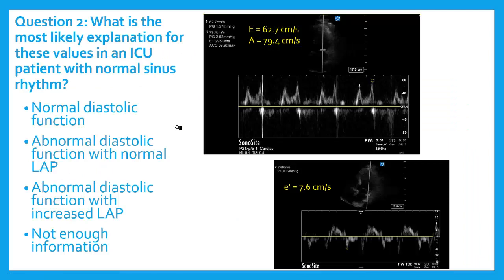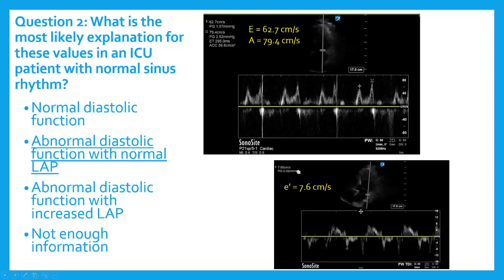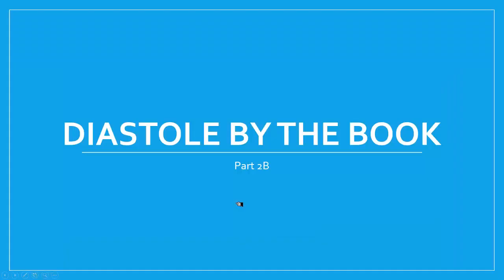Let's go through a case. What is the most likely explanation for these values in an ICU patient with normal sinus rhythm? I have an E velocity of 62.7, an A velocity of 79.4, and a lateral E-prime velocity of 7.6. Now this is slightly off axis, so E-prime is probably less than 10. Is this normal diastolic function, abnormal diastolic function with a normal left atrial pressure, abnormal diastolic function with increased left atrial pressure, or not enough information? The answer is abnormal diastolic function with a normal left atrial pressure. I know that because I have a lateral E-prime below 10, but my E to E-prime ratio is going to be well below 10, telling me left atrial pressure is normal. This would be called grade 1 diastolic dysfunction.